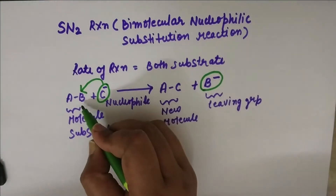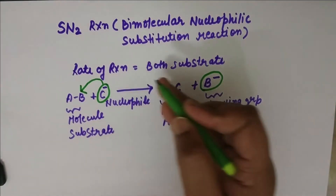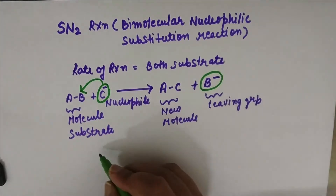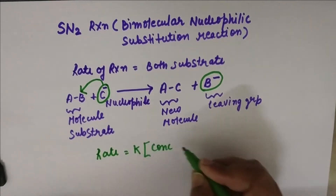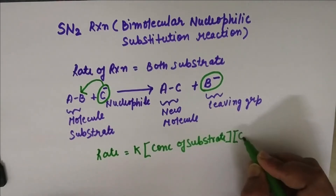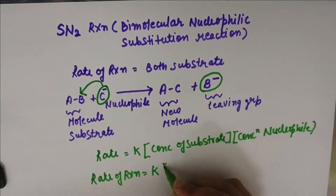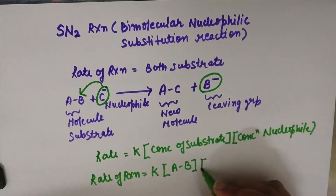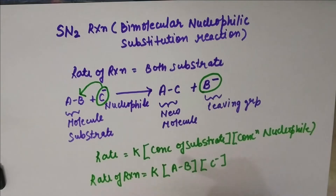The rate of reaction depends on the concentration of both AB and C — that is, the concentration of the substrate and the concentration of the nucleophile. So the rate of reaction = K × [AB] × [C], where K is the rate constant. That is why SN2 is known as bimolecular substitution reaction — bimolecular means the involvement of two molecules, AB (the substrate) and C (the nucleophile).